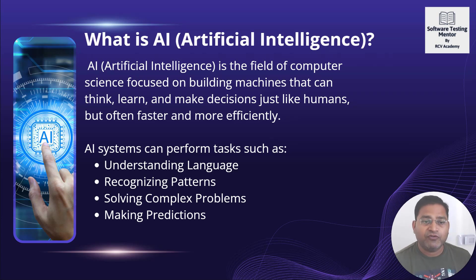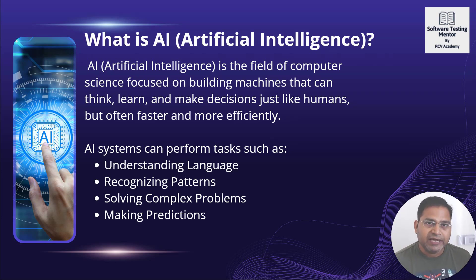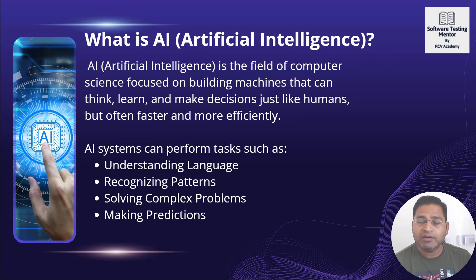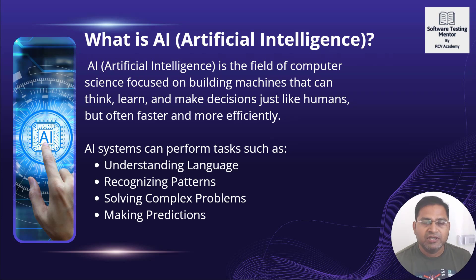AI systems can perform many things — they can understand language, and you can ask questions in any language and get answers. AI has been around for a couple of decades and advancements have been happening continuously. For example, the self-driving car that Tesla has been working on is an artificial intelligence system — a hardware-software combination.